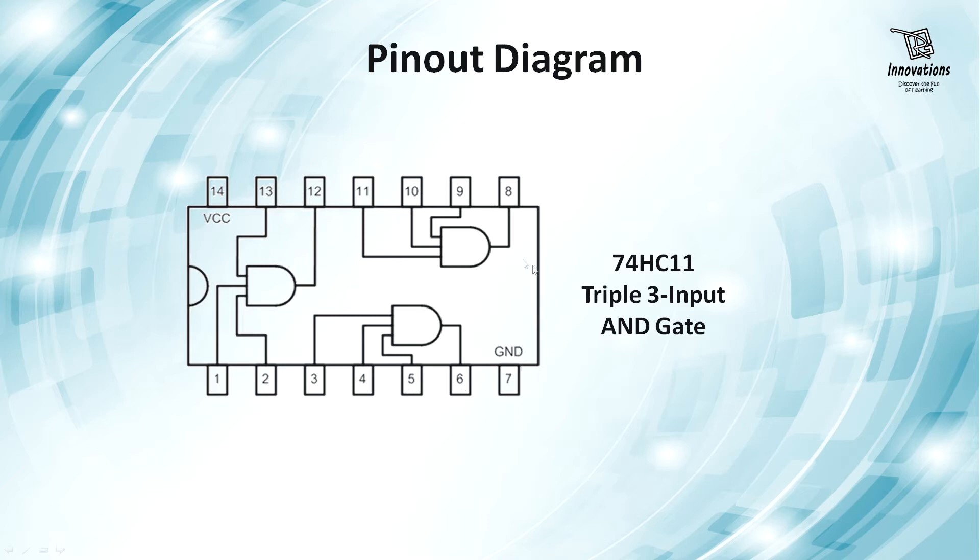Pin number 7 is a ground pin and segment 3 of the AND Gate has input pin number 11, 10, 9 and output is pin number 8. Pin number 14 is positive power supply.